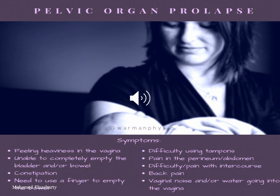For clinical presentation, women with pelvic organ prolapse can present with any of these symptoms: feeling of heaviness in the vagina, inability to completely empty the bladder and/or bowel, constipation, need to use a finger to empty the bowel, difficulty using tampons, pain in the perineum or abdomen, difficulty or pain with intercourse, back pain, vaginal noise, and water going into the vagina.